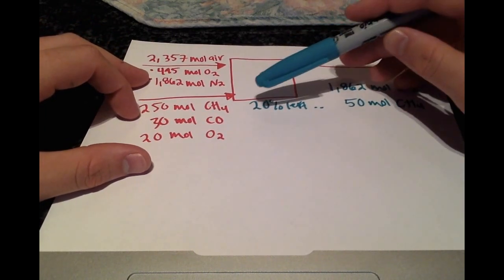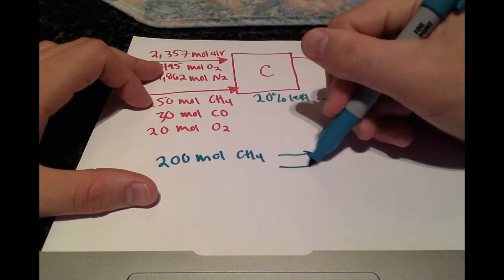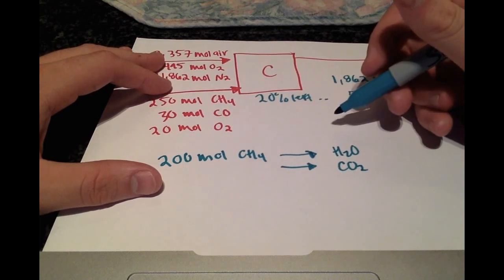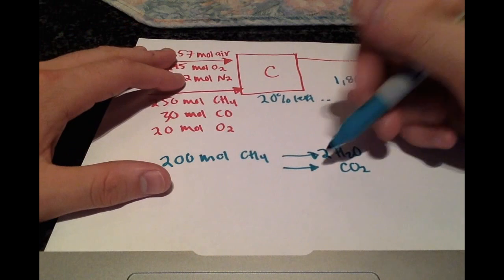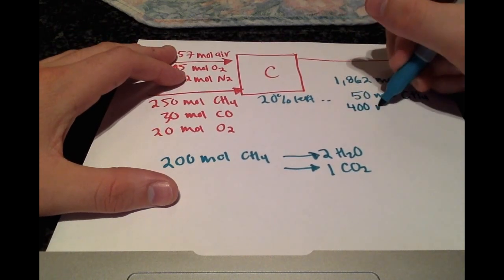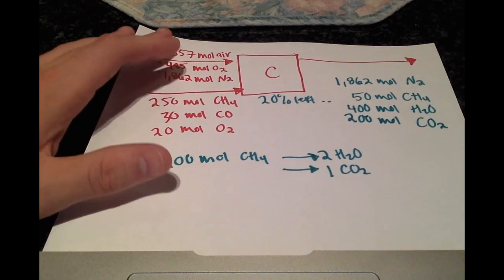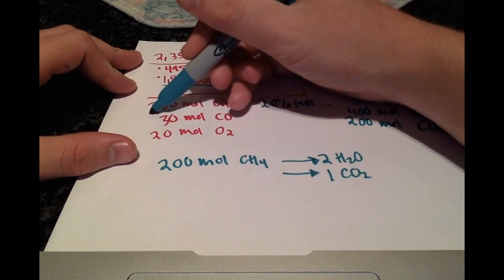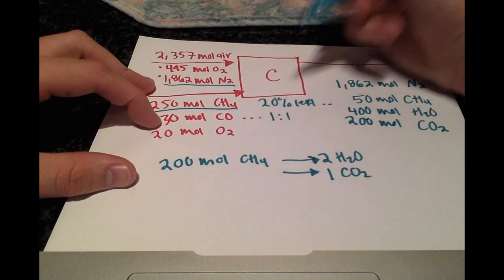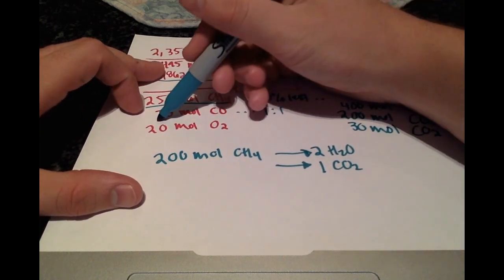From our reaction we know that 200 moles of methane reacted and it formed two different products: H2O and CO2. It formed twice as much H2O and the same amount one to one ratio of CO2. So that's equivalent to 400 moles of H2O and 200 moles of CO2. The 30 moles of carbon monoxide converted one to one directly to carbon dioxide. So we also have 30 moles of CO2 here coming from CO.